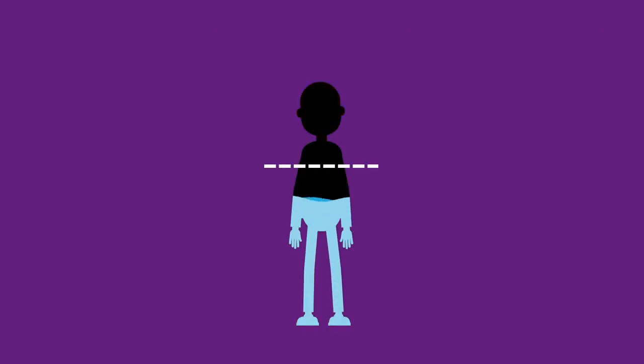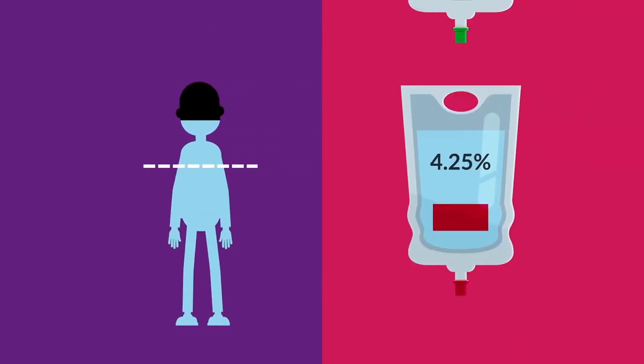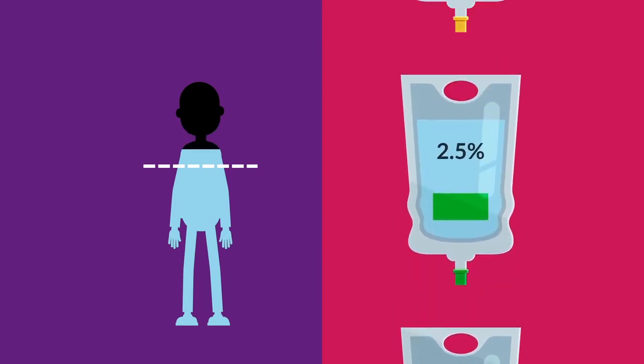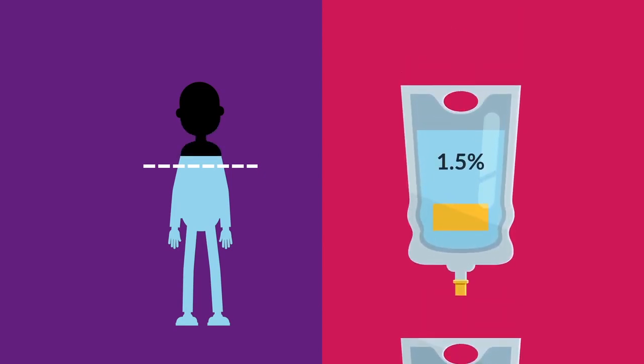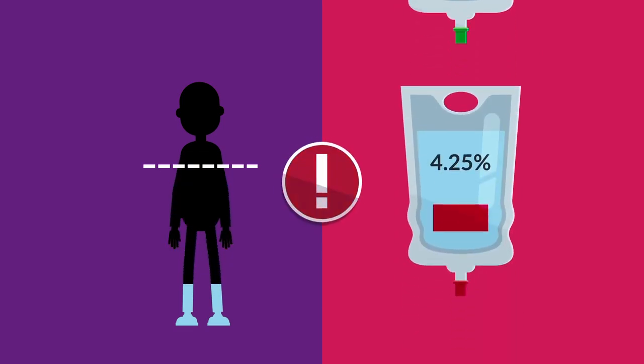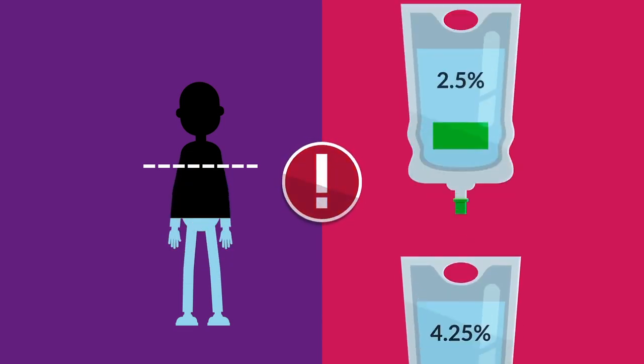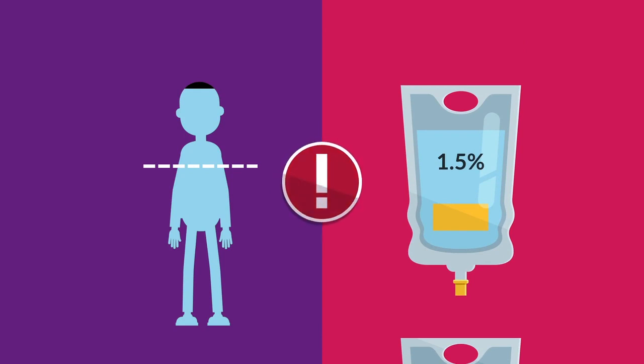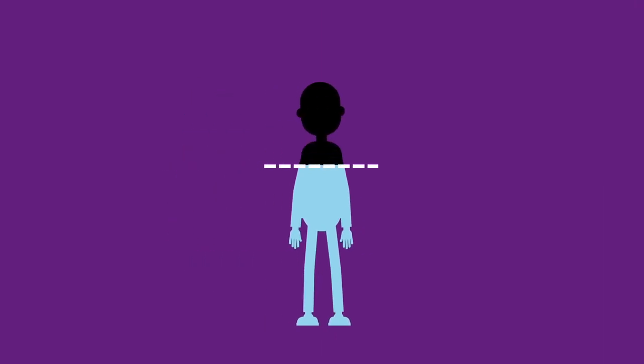During times with fluid overload, you'll use a stronger PD dextrose solution. Other times, you'll use a regular or low strength dextrose solution. Using too strong a dextrose solution can take away too much fluid. Using too weak a dextrose solution may not remove enough fluid. It's all about balance.